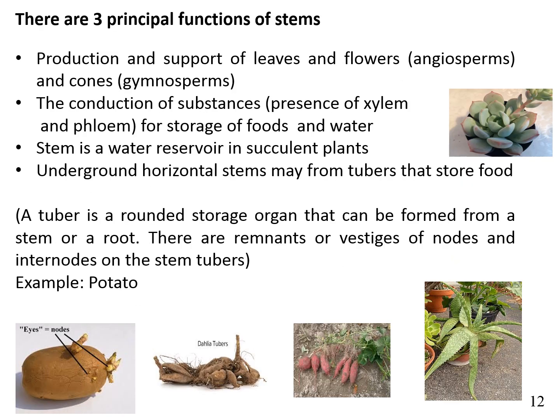The three principal functions of the stem are: production and support of leaves and flowers — in the case of angiosperms — and support of cones in the case of gymnosperms. The other functions include conduction of substances through xylem and phloem, and storage of food and water.